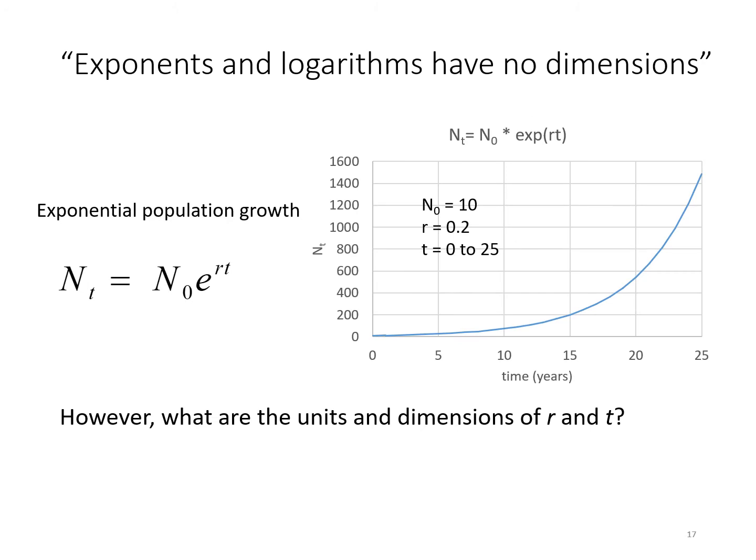For instance, exponential population growth. On the left, we have the number of a particular species at time t equals the number at time zero times e to the power of rt, where t is time and r is some kind of constant. T being in years, r must be equal to per years, or more generally, t being the dimension time, r must be in the dimensions of per time.